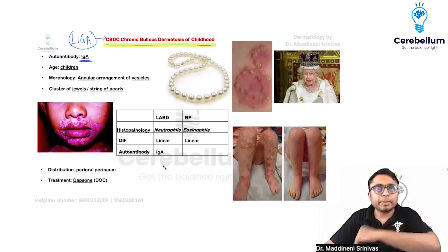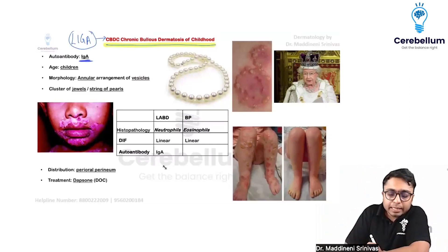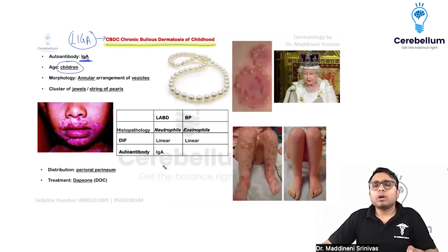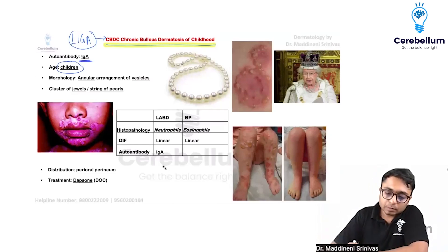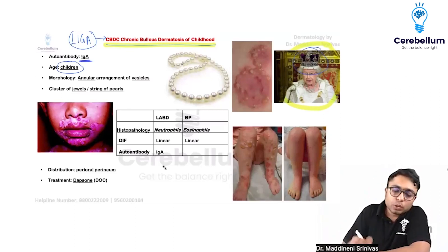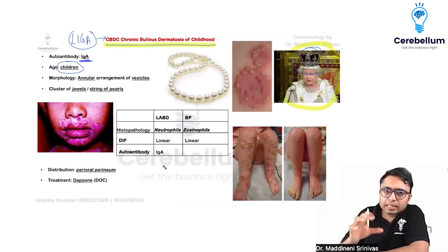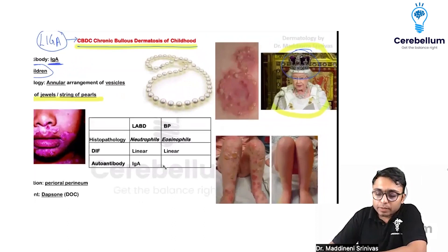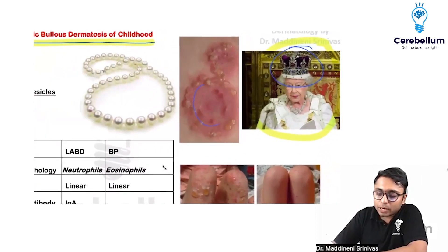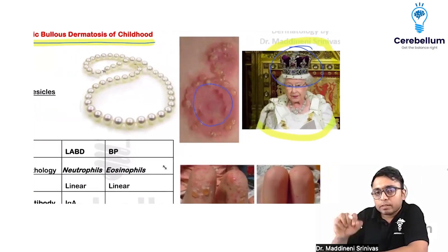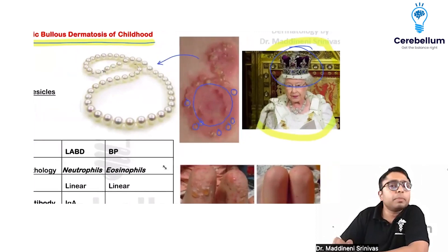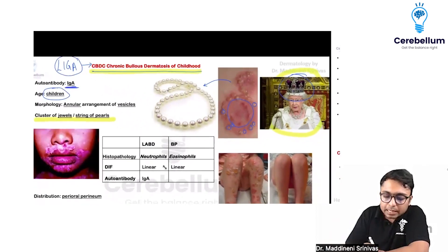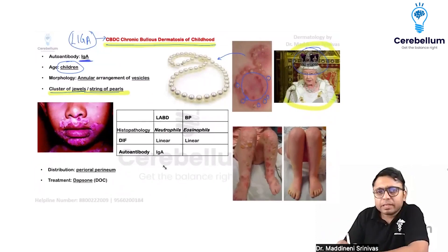Remember: the other name is CBDC — Chronic Bullous Disorder of Childhood — and as the name suggests, this disease is seen in children. The lesions are very important to remember. As you can see here, there is a crown. The descriptive terms used for these lesions are 'cluster of jewels,' 'crown of jewels,' and 'string of pearls.' This is because you can observe annular lesions studded by vesicles, resembling a string of pearls.